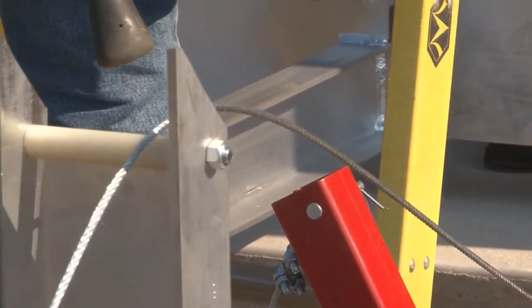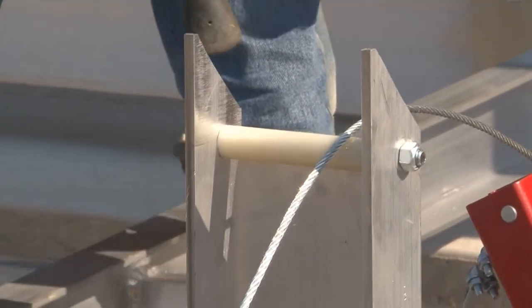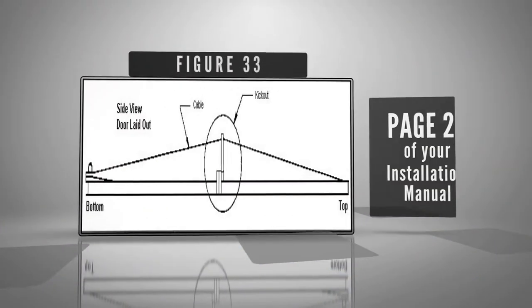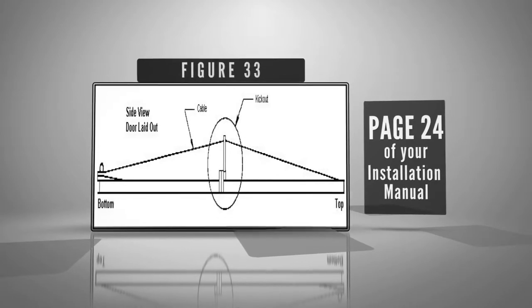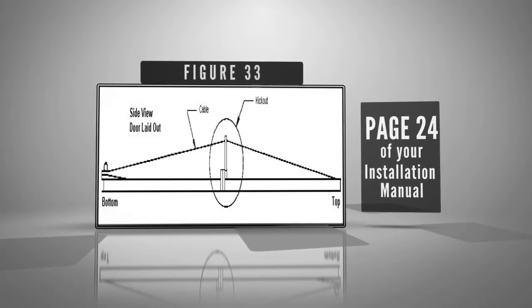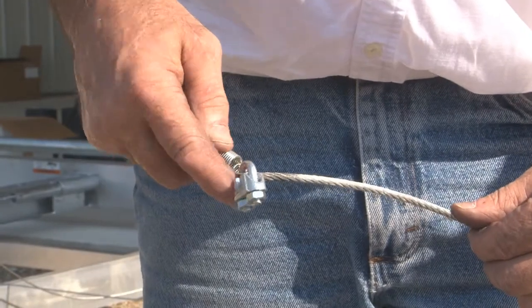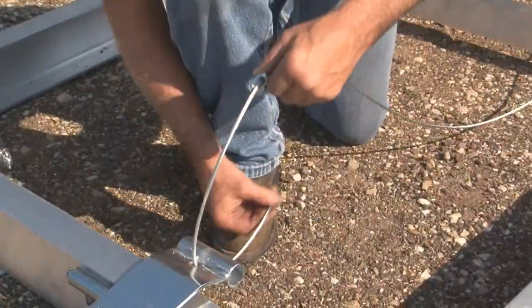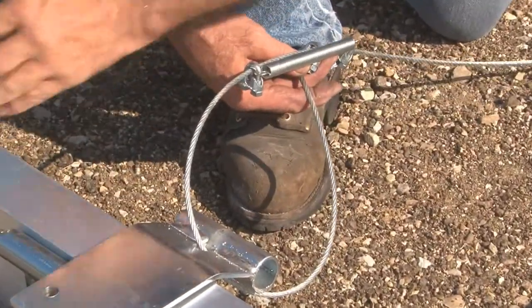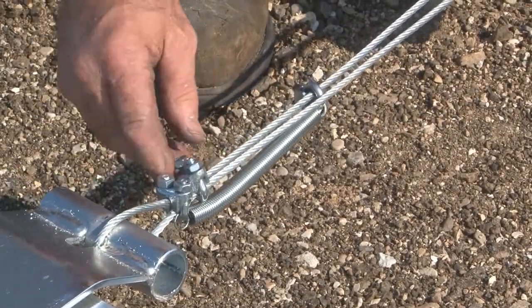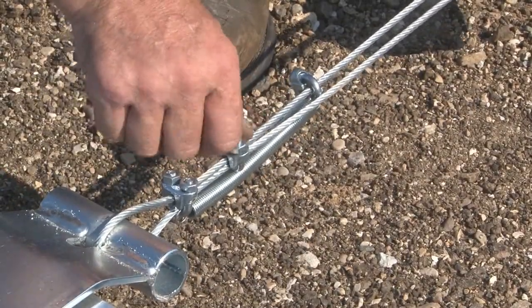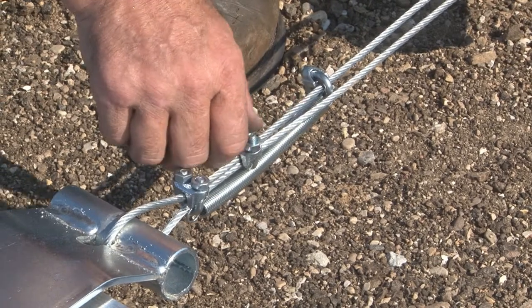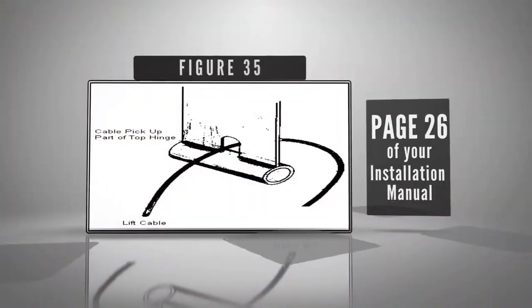Stand the kickouts up and lay the lift cables on them. See figure 33, page 24. Be sure lift cables are free to pull away from the door. Slide two cable clamps over the cable and feed the cable through the pickup on top hinge. Slide a clamp up as close to pickup as possible and slide the second clamp one and one half inches lower and tighten. See figure 35 and 36.